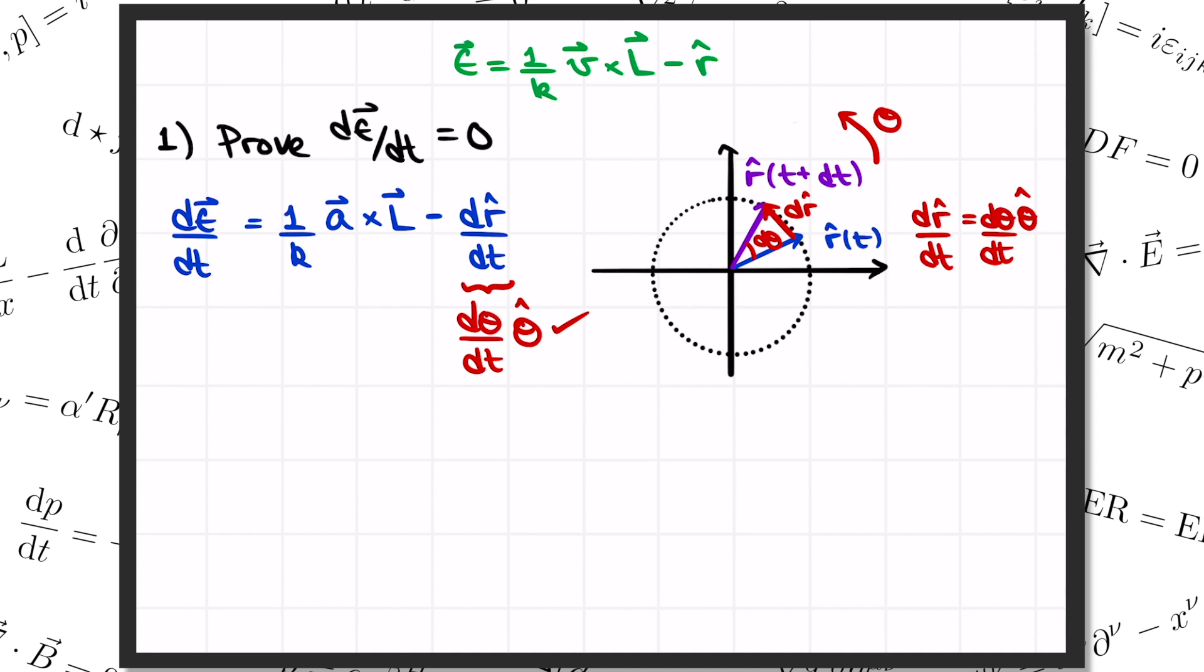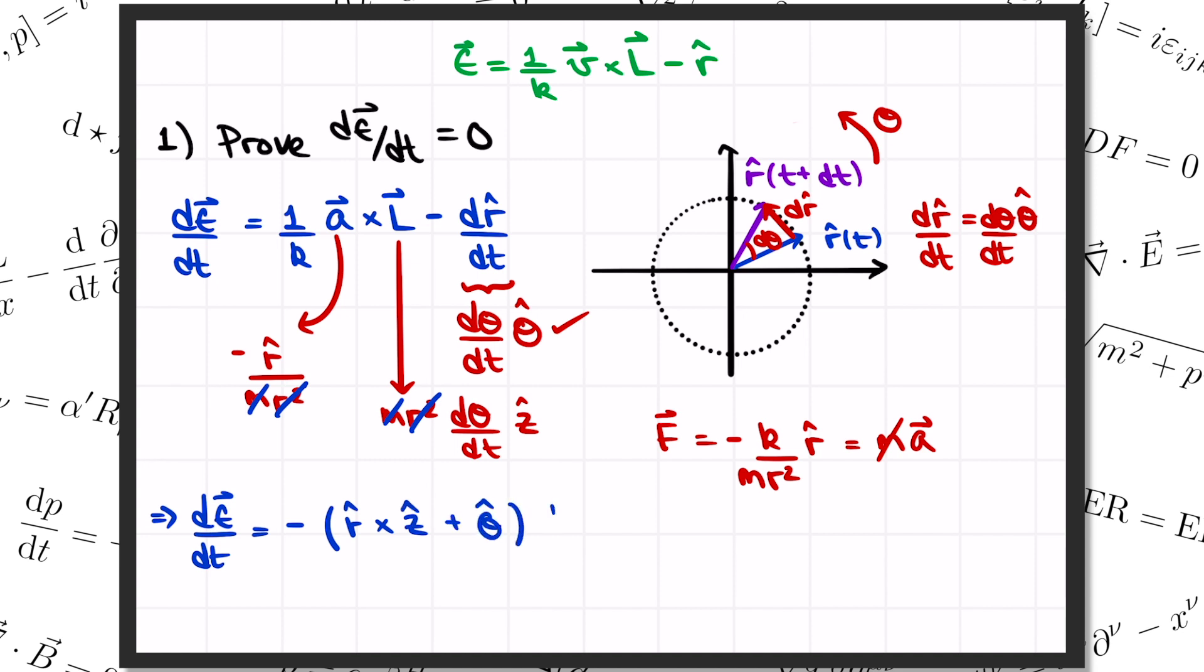As for the first term, remember, we know the angular momentum L is mr squared times d theta by dt, pointing in the z direction. As for the acceleration, well, we know from Newton's law that the force on the planet is equal to minus k over r squared pointing in the r hat direction. In other words, back toward the origin. And that's equal to the mass of the planet times its acceleration. So if we divide by the mass, we get the acceleration of the planet. And we can plug that in to get minus r hat over mr squared. These mr squareds cancel on the top and bottom. And so we get d epsilon by dt equals minus r hat cross z hat plus theta hat all times d theta by dt.